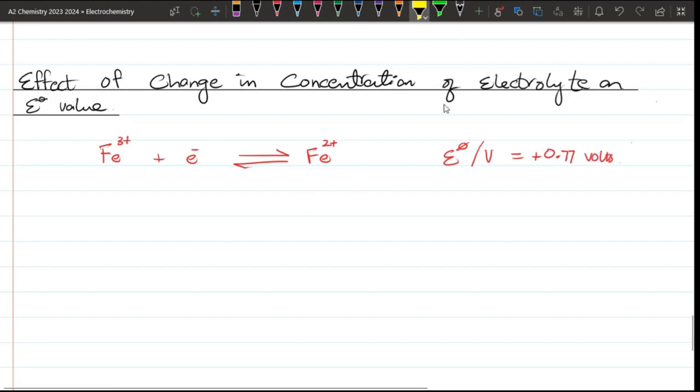This E° sign, what does it mean? It means that this is standard. E° is standard, so I told you that 1 mole per dm³ concentration, 1 atm pressure, and temperature would be 298 Kelvin or 25 degrees Celsius.